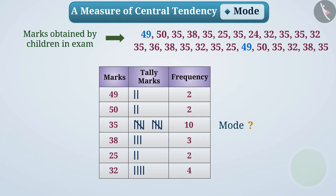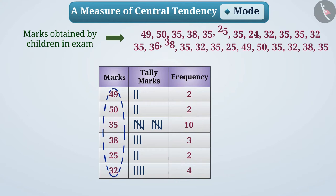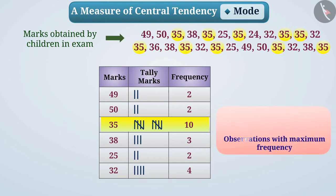Absolutely right. The frequency of an observation tells us how many times it has occurred among all the observations. So the observation with the highest frequency will be the most frequent in the group — that is, the most prevalent. Therefore, the observation with maximum frequency can be called the mode.